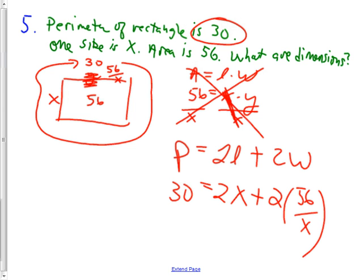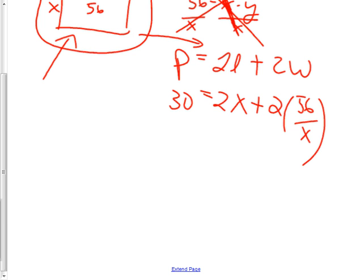See how I got the stuff in the picture? You can get it labeled nicely in the picture with one variable. And then I can take the stuff from the picture and put it in the formula. So now here you have an equation that involves an x in the denominator. That's why it's in this unit. So I'm going to multiply everything by x. 30x equals 2x²+2 times the 56. And I multiplied everything by an x here.